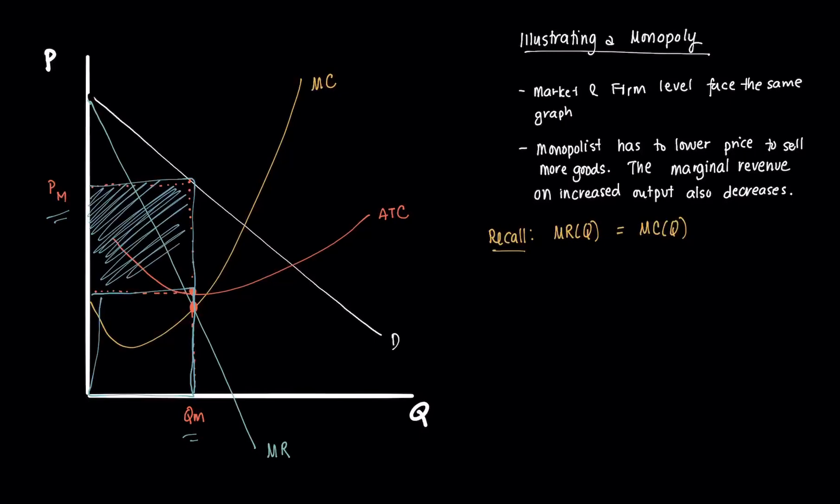And the monopolist in this case earns this much of economic profit. That area there is abnormal profit, which we expect under a monopolist.